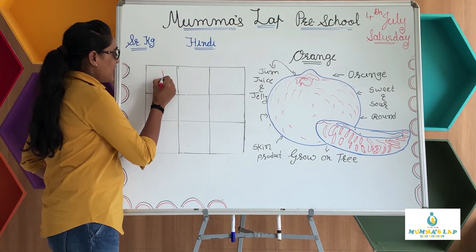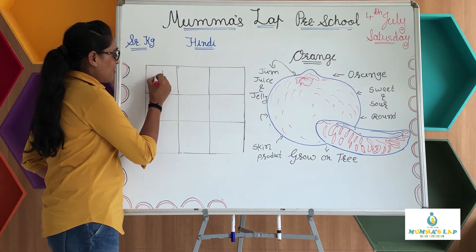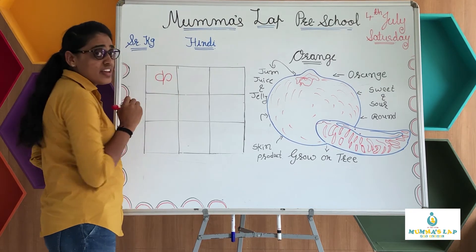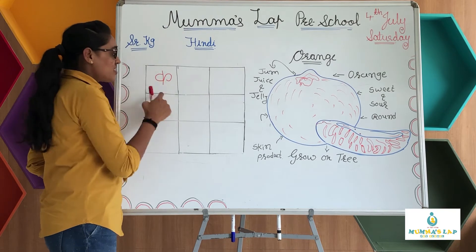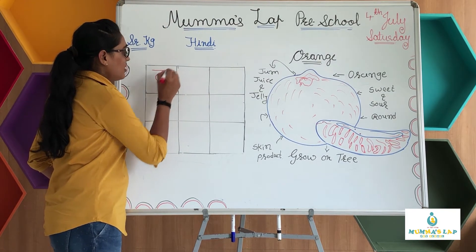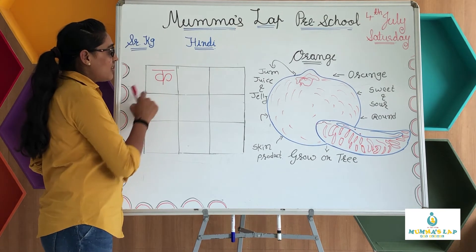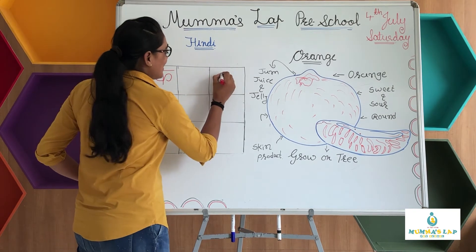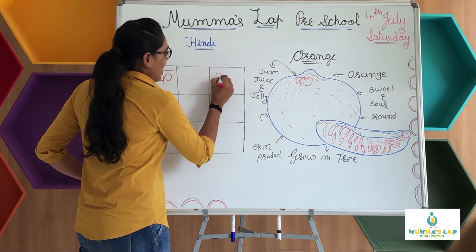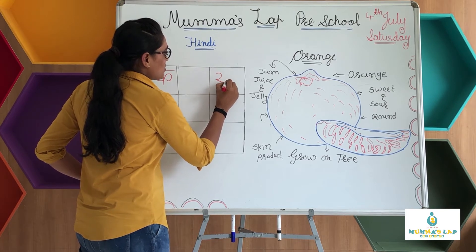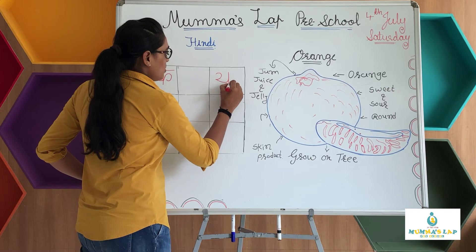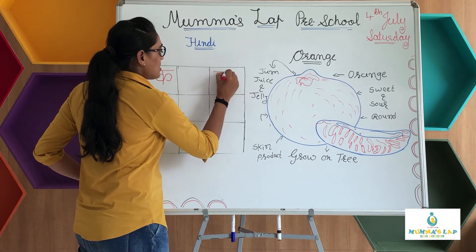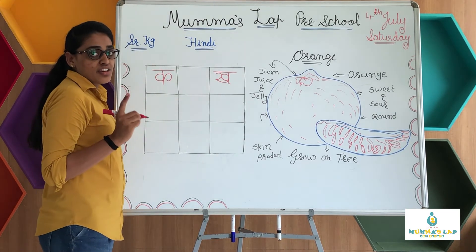First, a standing line, then a left curve and right curve — but don't touch the standing line — and a slipping line. This is the curve. Curve for camel. And the last slipping line. Kha se kha.